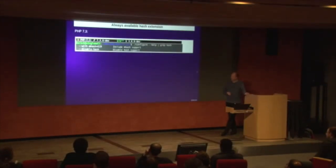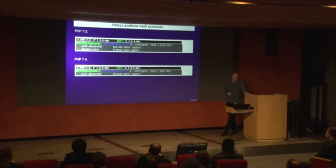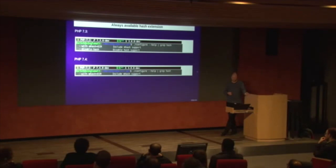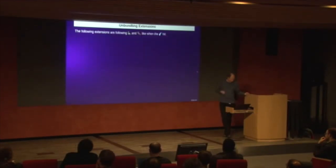The hash extension in PHP 7.3 was not always available — you needed to enable it when you compile PHP, which was annoying because some hosts don't do this, meaning you don't have the password hash function that PHP provides. In PHP 7.4 it's always enabled and you can't disable it either, which is good news.